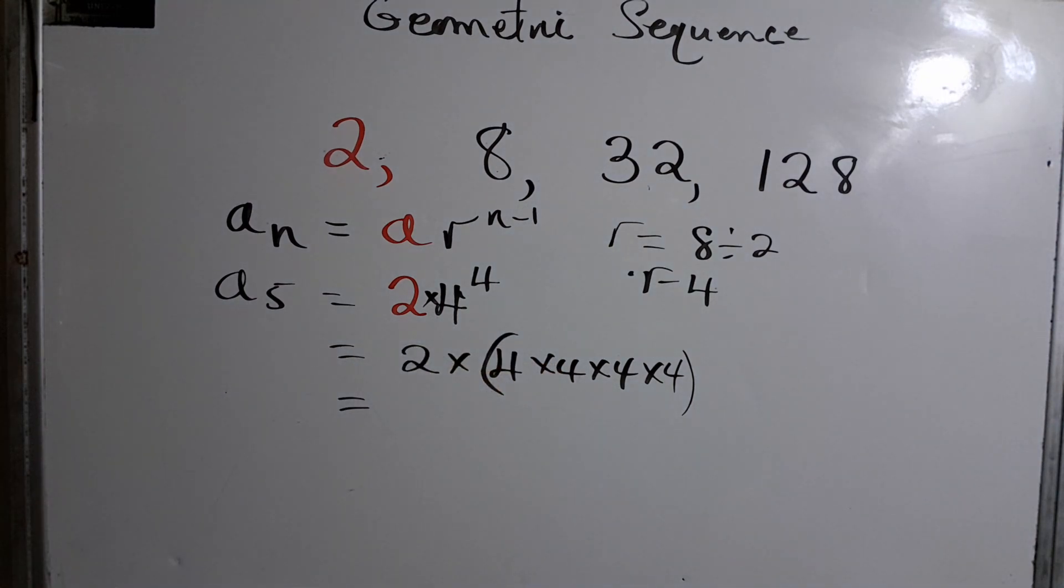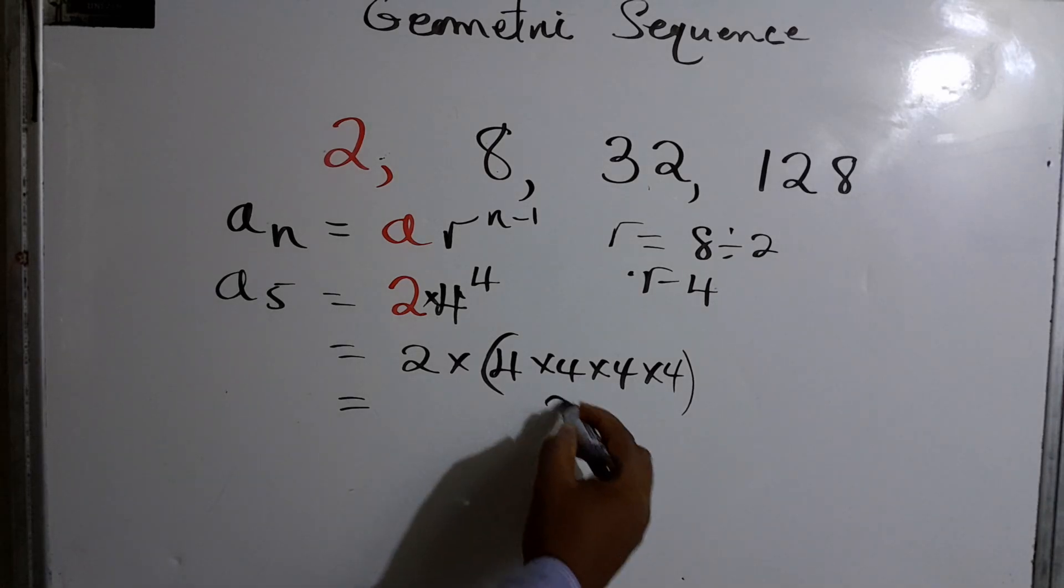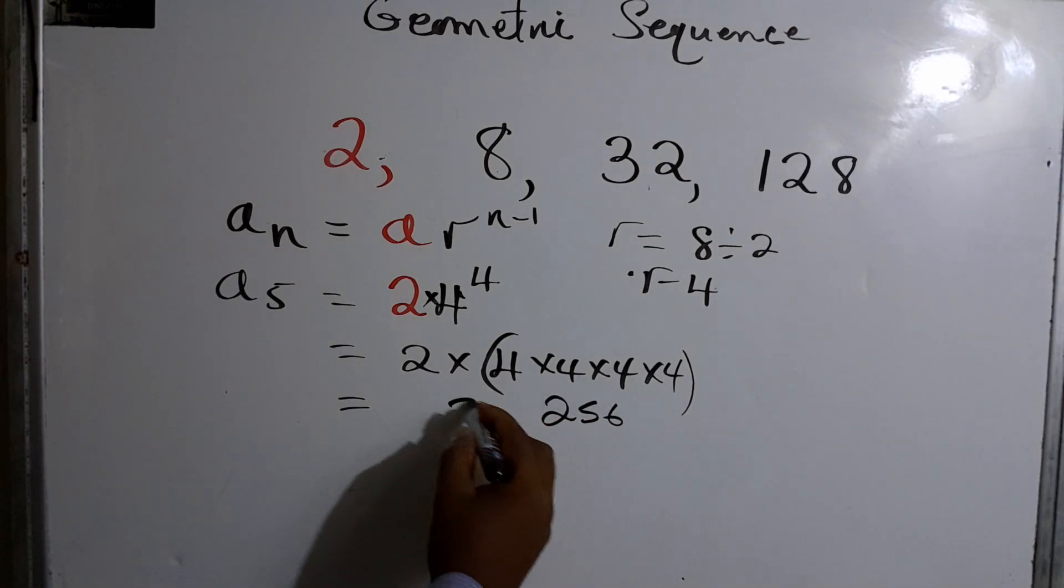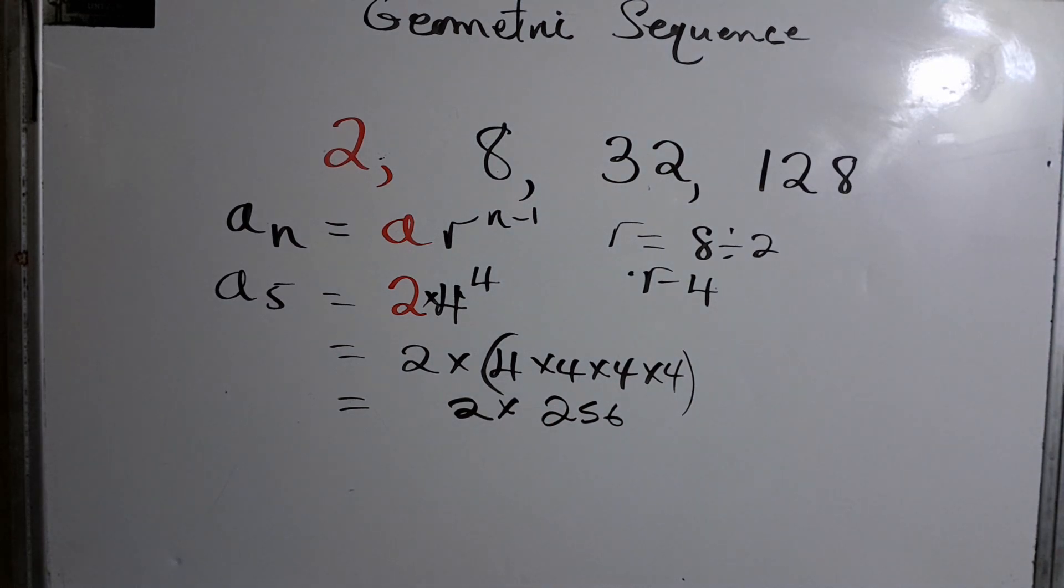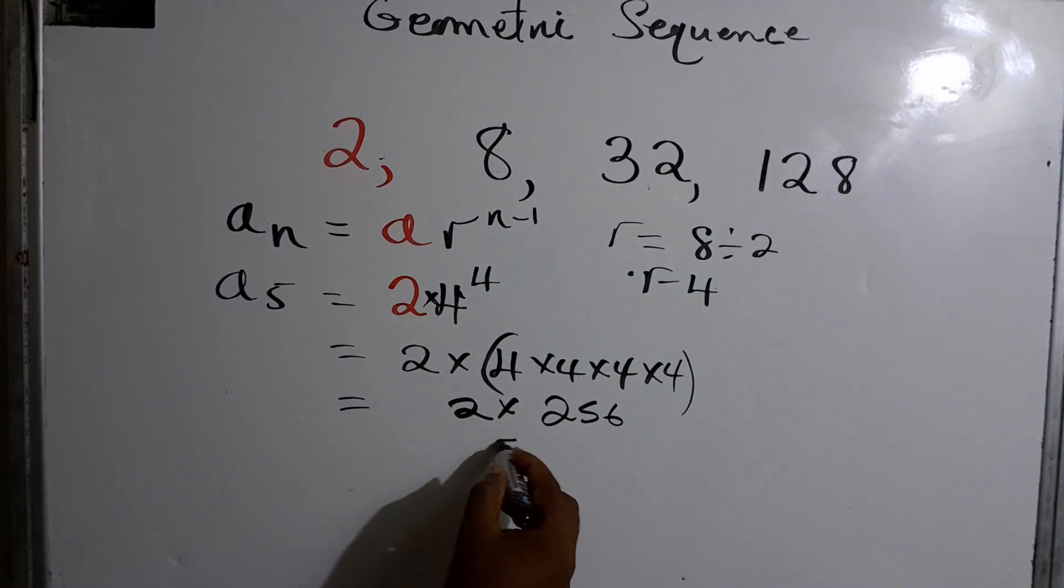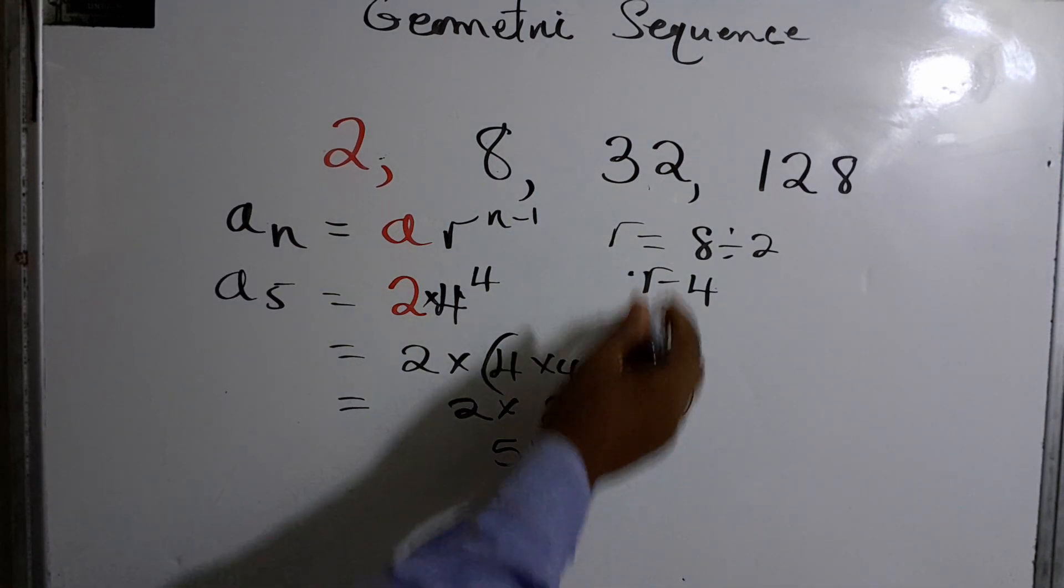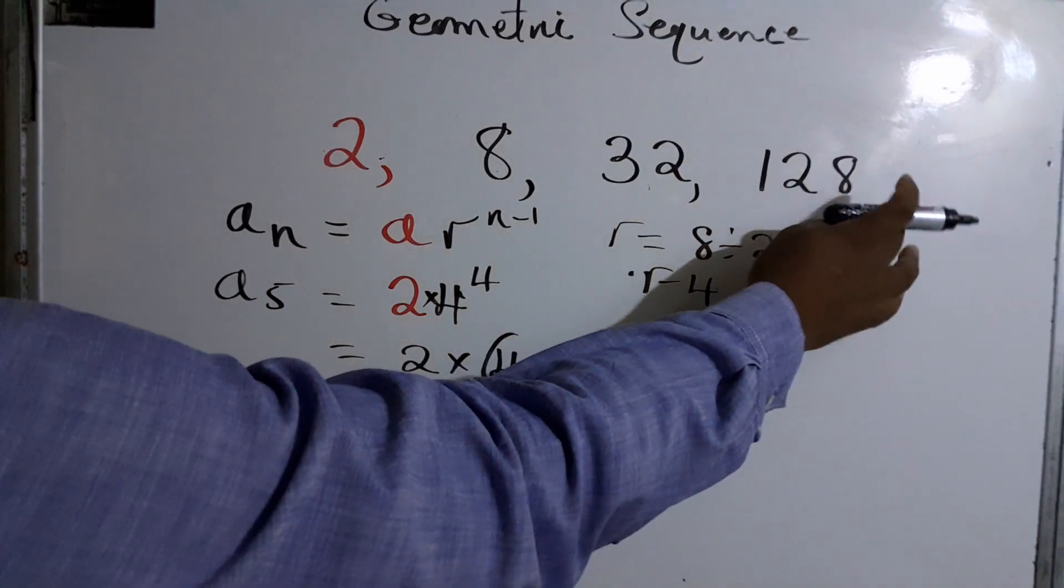Let us get a calculator. All right, so my calculator gives me 256. So this works out to 256, and then we multiply by two, which gives us 512. So the next term could be 512.